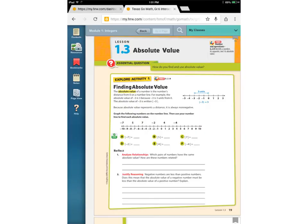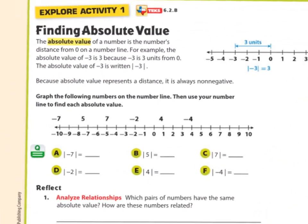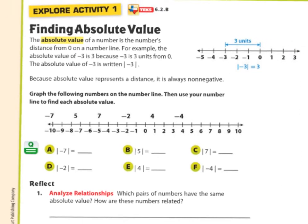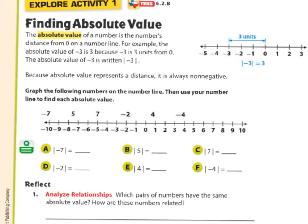The absolute value of a number is how many units away from zero that number is. When we're talking about a distance, you don't have a negative distance — it is always positive, and that's what absolute value is. It is a distance. The absolute value of a number is the number's distance from zero on a number line.